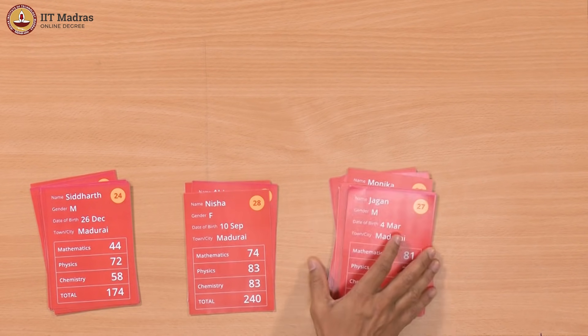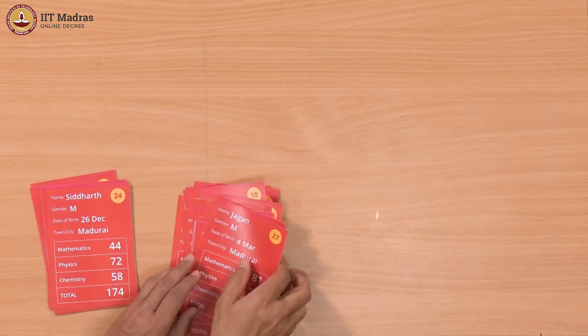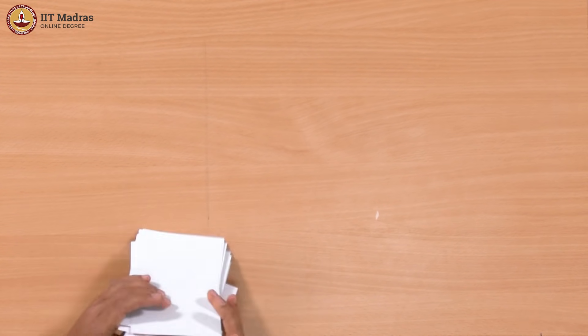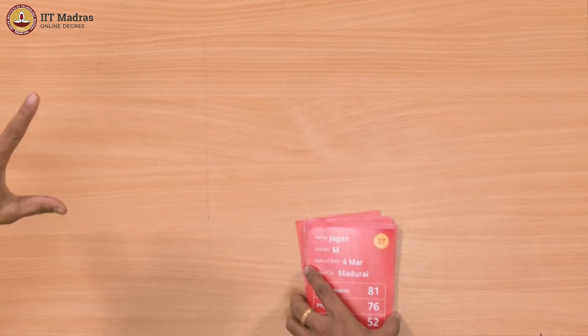But supposing we did it in one step — can we do it in one single iteration? Instead of explicitly pulling out all the girls first and then going through all the girls to pull out the Chennai people, can we just do it in one shot? We should — just go through the cards in one iteration, and at each stage check whether it is female. But that is not enough; we also need to check the city. So we have to check two conditions, and both of them have to be true. It is an AND of two conditions.